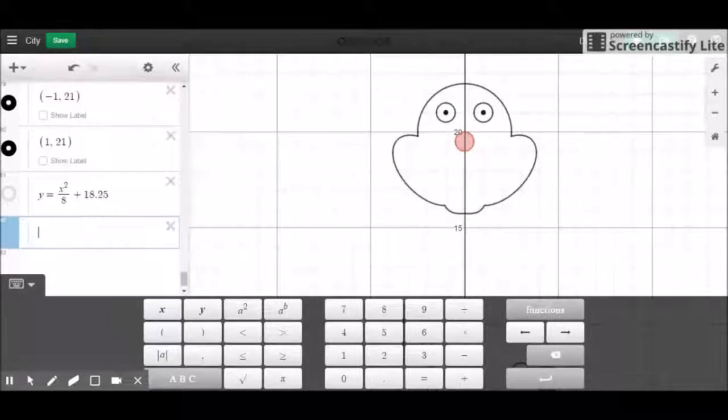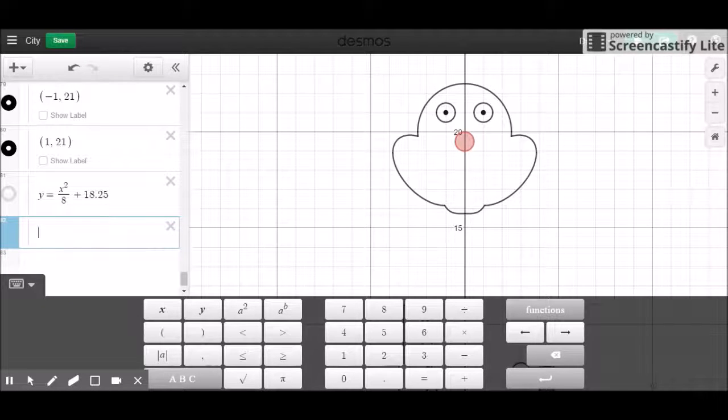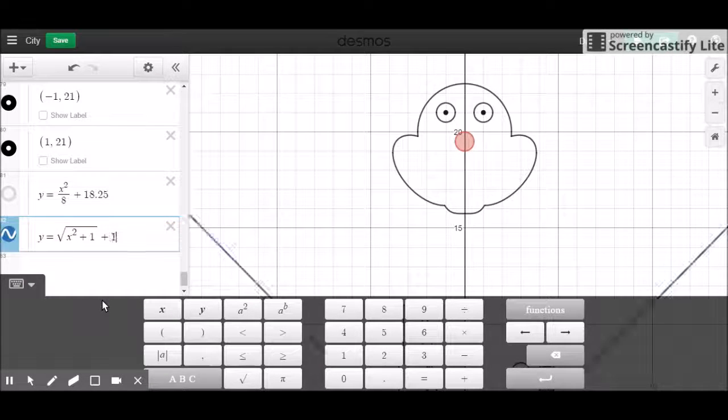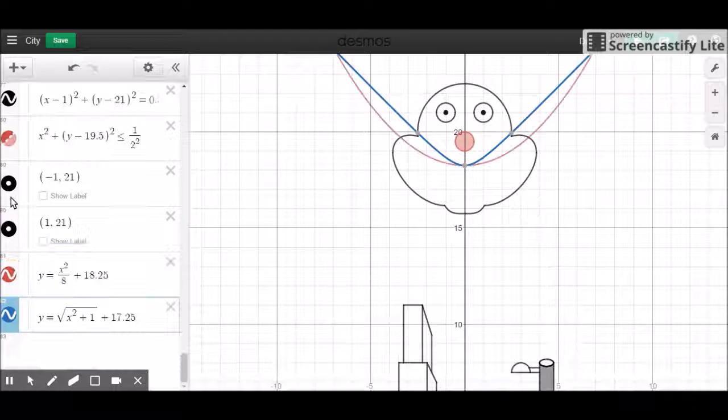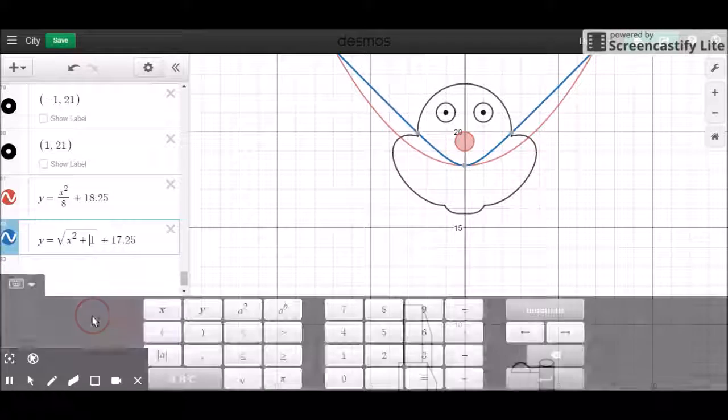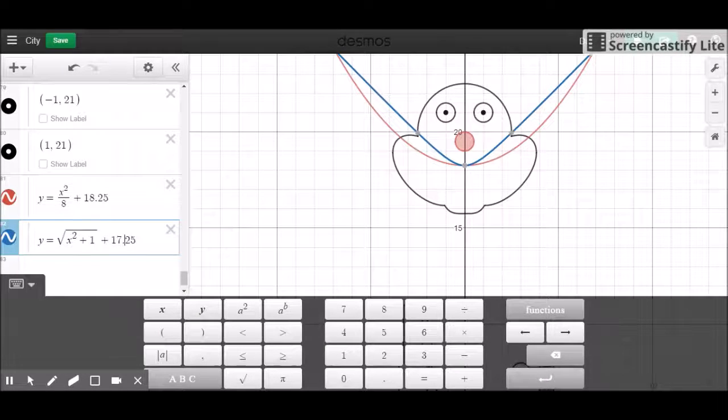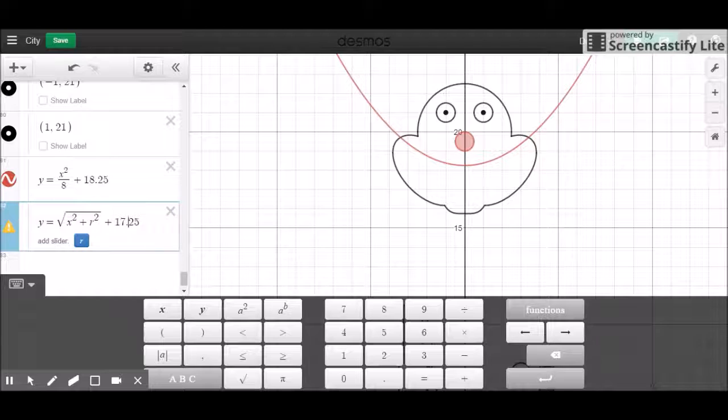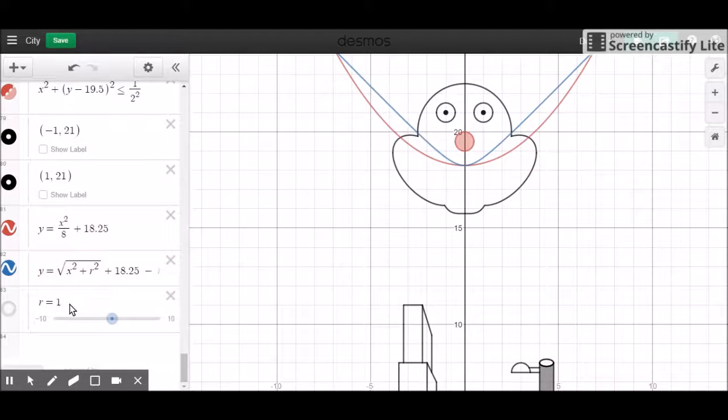Another option that we can try. This is a very similar shape to a parabola, it's called a hyperbola. Let's try and remember what this graph actually looks like. X squared plus 1 plus 17.25. Let's put a constant down here, plus R squared, 18 plus R. So now I can just play with this value.